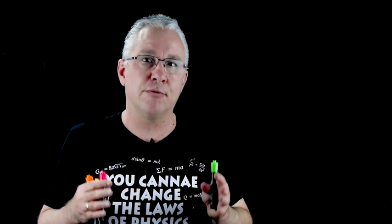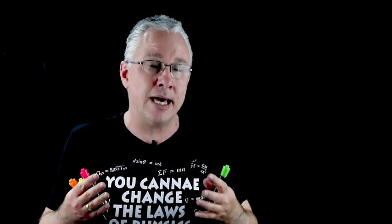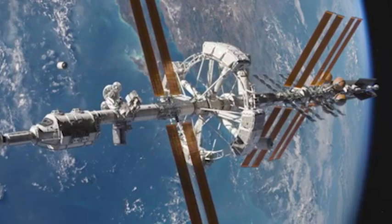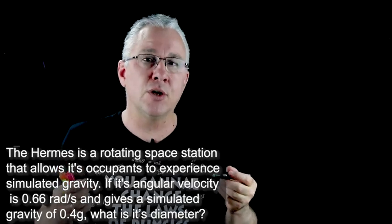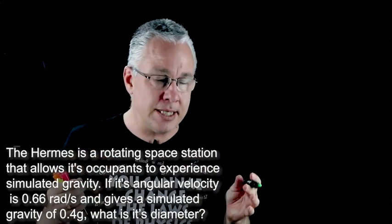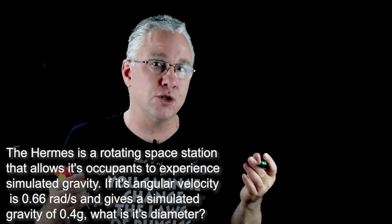Now in this case I'm using an example from a very great movie that I encourage you to watch. It's called The Martian and in that film we have a very large spacecraft that is called the Hermes and the Hermes has a ring that spins, that allows the astronauts to experience a simulated gravity and in this question we're trying to work out what is the diameter of that ring given some certain constraints.